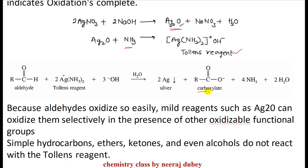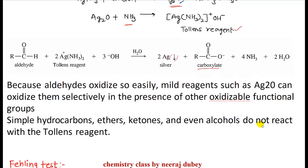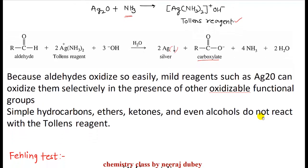In basic medium, the carboxylic acid exists in the form of carboxylate ion. Tollens' reagent gets reduced to elemental silver, and because of this elemental silver we call it the silver mirror test. Because aldehydes oxidize so easily, mild reagents such as silver oxide can oxidize them selectively in the presence of other oxidizable functional groups.